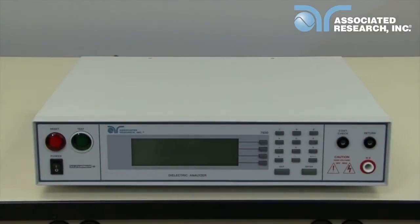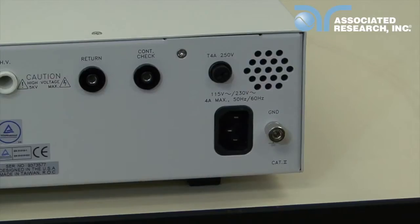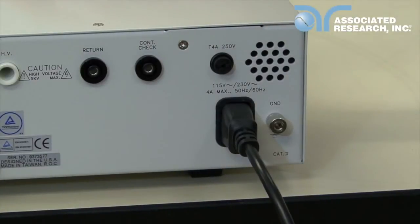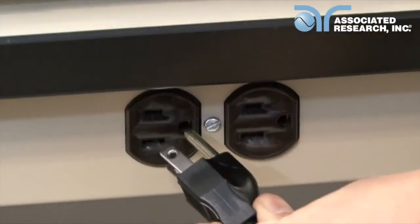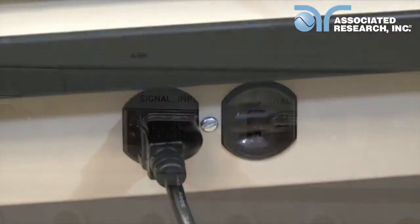First you'll need to power up your 7650 instrument. Connect the power input plug into its socket on the rear panel of the instrument. Connect the male end of the plug to the outlet receptacle.